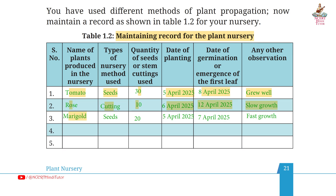Third plant: marigold. Method: seeds. Quantity: 20. Date of planting: 5th April 2025. Date of germination: 7th April 2025. Observation: fast growth.